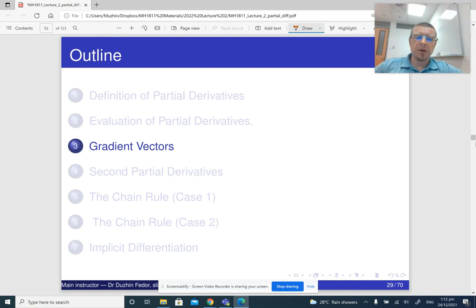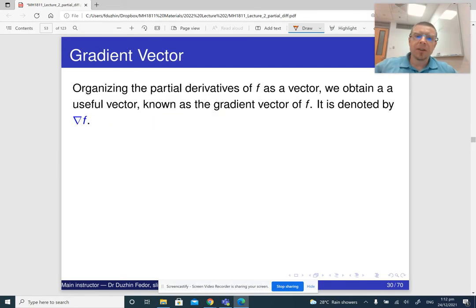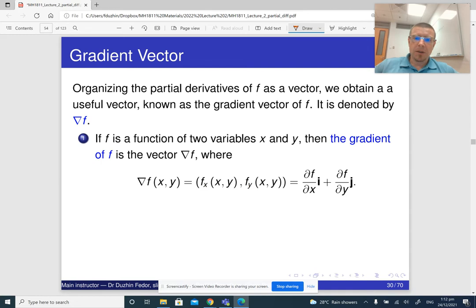In the next part of the lecture, we are going to introduce the gradient vector. A gradient vector is a method to organize all partial derivatives of a function of several variables into a vector. It is denoted by this symbol, like a triangle, called nabla. It's not a letter from any alphabet, just a special symbol to denote the gradient vector, nabla f.